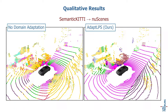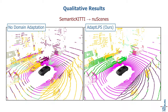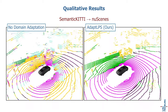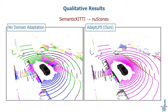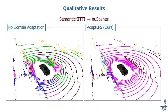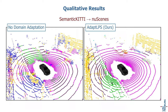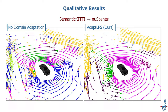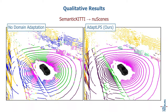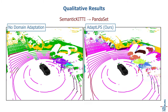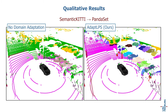Here are some qualitative results from our model. The images on the left are the panoptic outputs obtained when no domain adaptation is performed, while the images on the right are the panoptic results obtained after incorporating a domain adaptation strategy. We observe that our approach allows accurate detection of instances in the scene, while the model with no domain adaptation incorrectly predicts the instances.